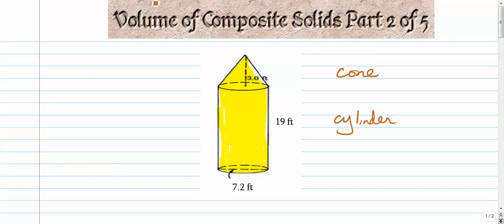So if we're thinking volume, we're trying to visualize if we were to pour water in this thing, how much water can fit on the inside. So we're going to basically just find the volume of the cone and add it to the volume of the cylinder. That's our plan of attack.